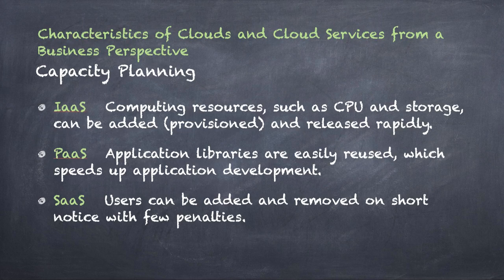The next section: characteristics of cloud and cloud services from a business perspective — capacity planning. We want to do capacity planning so we can be ready for growth. With IaaS — infrastructure as a service — we look at things like CPU, storage, and RAM. In the cloud, these can be provisioned and released rapidly. You only pay for what you use, so if you need 16 CPUs you get them, and if you only need four later, you drop back down and only pay for the period you used the 16.